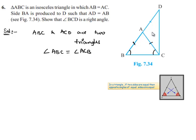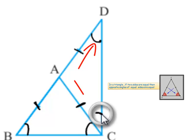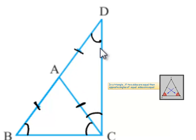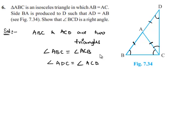And also, in triangle ACD, AD is equal to AC, so we can say that angle ADC is equal to angle ACD, as they are angles opposite to equal sides AD and AC. That is, angle ADC is equal to angle ACD. Let us assume these to be as two equations.